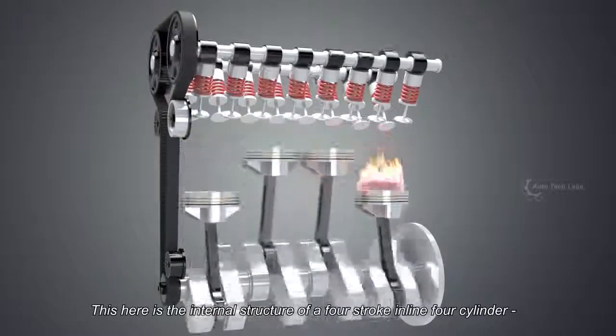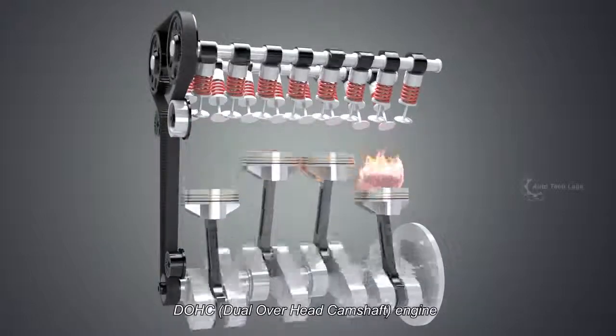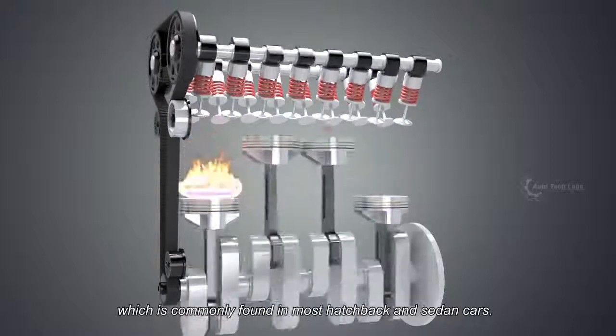This here is the internal structure of a 4-stroke inline 4-cylinder DOHC engine, which is commonly found in most hatchback and sedan cars.